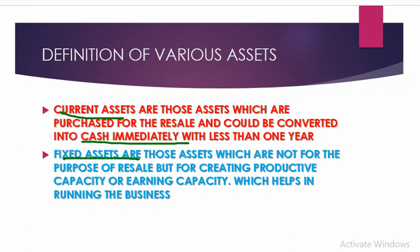Fixed assets are those assets which are not for the purpose of resale, but they create productive capacity and generate earning capacity. Without fixed assets, we cannot run the business. There is a thin line between current assets and fixed assets: if we have a furniture shop, the furniture is a current asset; but in a manufacturing organization, furniture is a fixed asset. Similarly, if we manufacture machinery and resell it, it is a current asset; but if we use machinery for manufacturing, it is a fixed asset. Fixed assets include plant and machinery, building, freehold premises, leasehold premises, tools, etc.